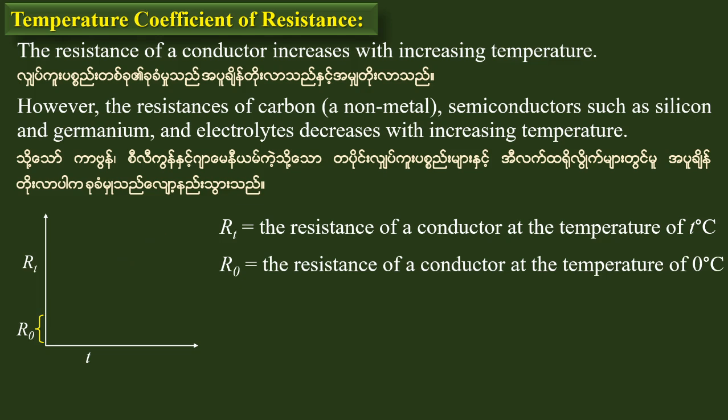When we look at the graph, when the temperature is low, the resistance is low. The resistance of the conductor increases with increasing temperature. When the temperature is low, the resistance of the system is also low.